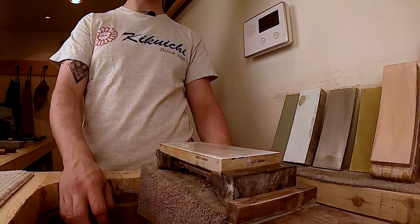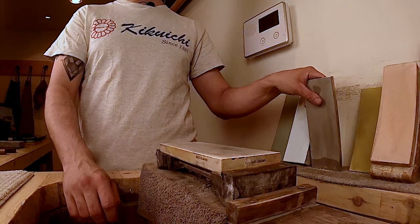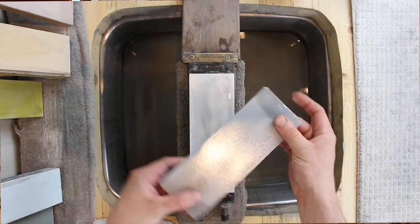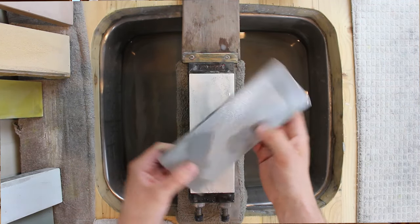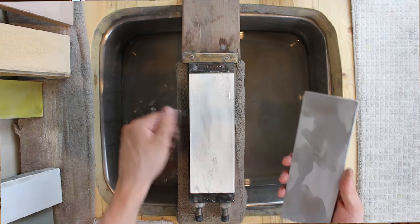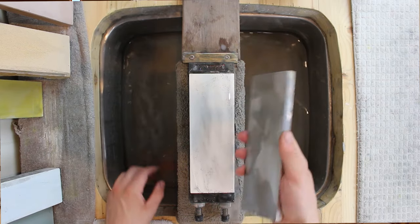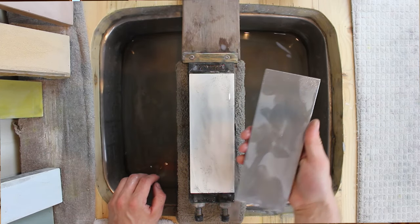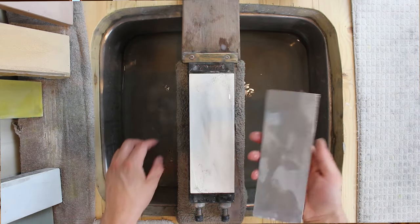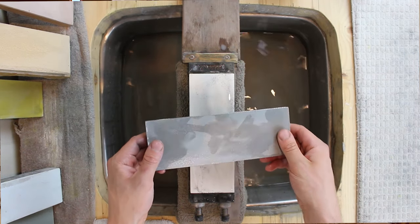I, in fact, will flatten my stones between every knife and I prefer to use an Atoma diamond plate 140 grit. These come in this 140 grit and 400 grit. Obviously the 140 is just going to do things a little bit faster, but they're a little bit more expensive. In some cases you might not want the most aggressive diamond plate, but for our purposes today this 140 is going to be perfect.